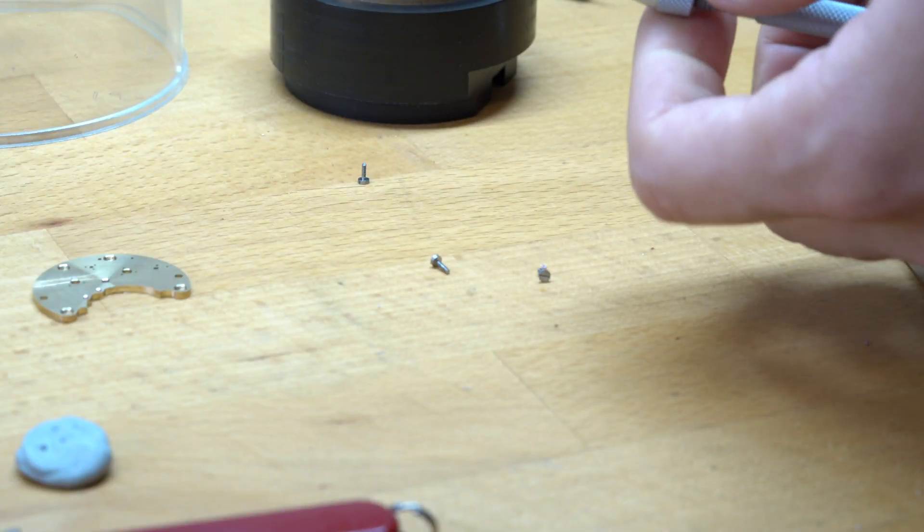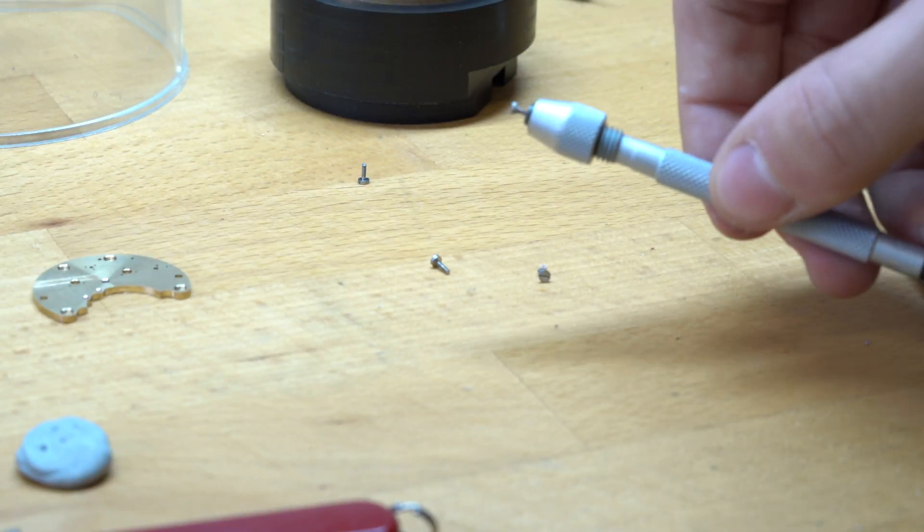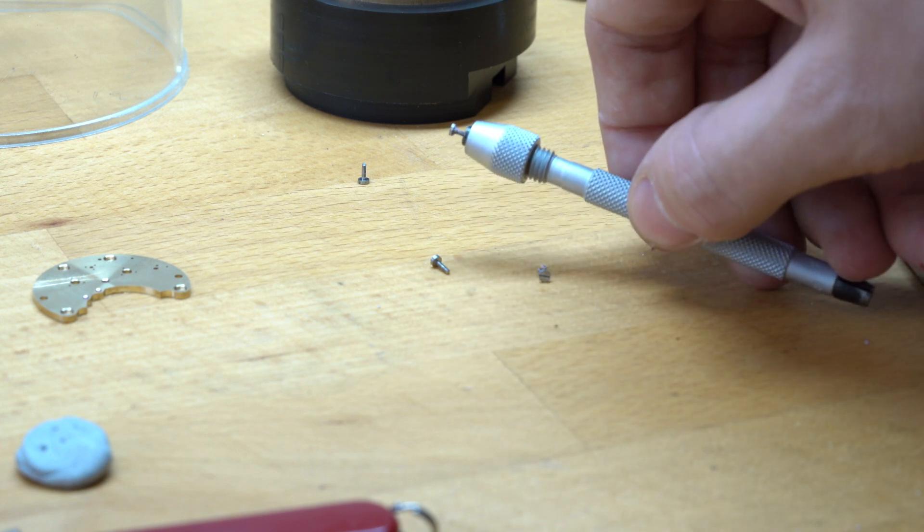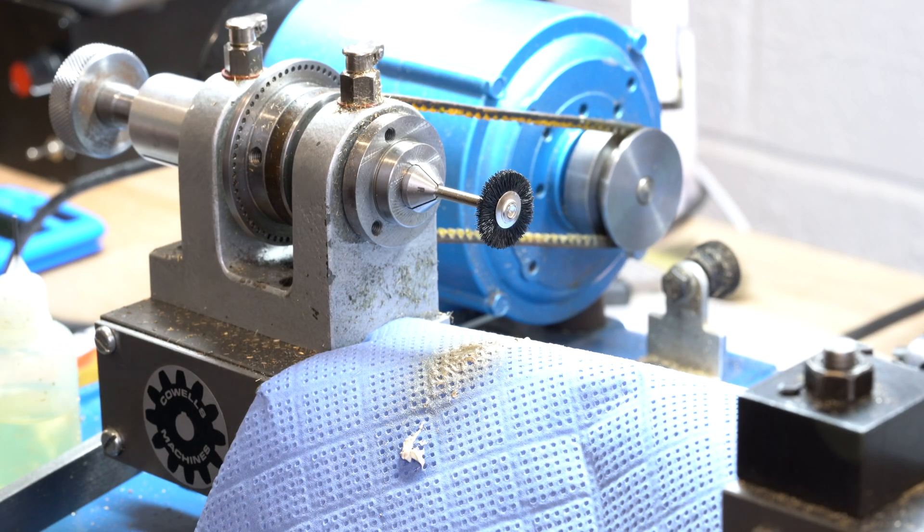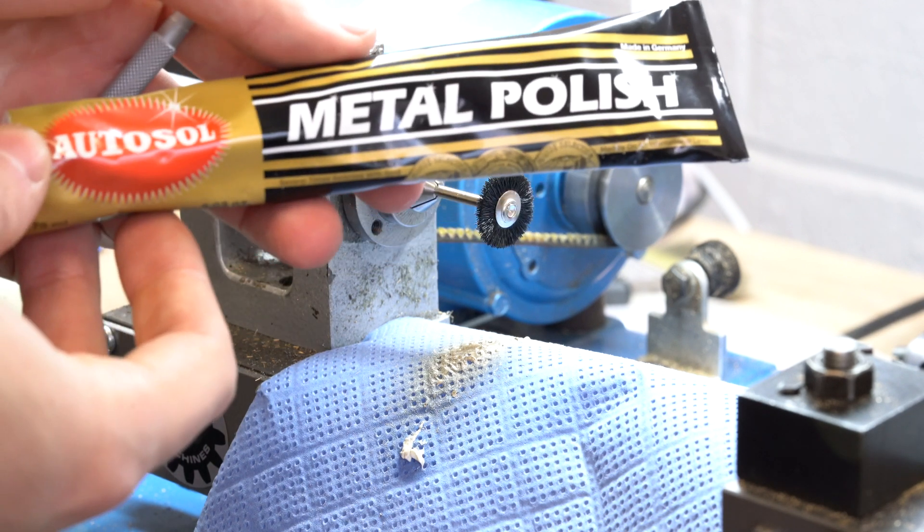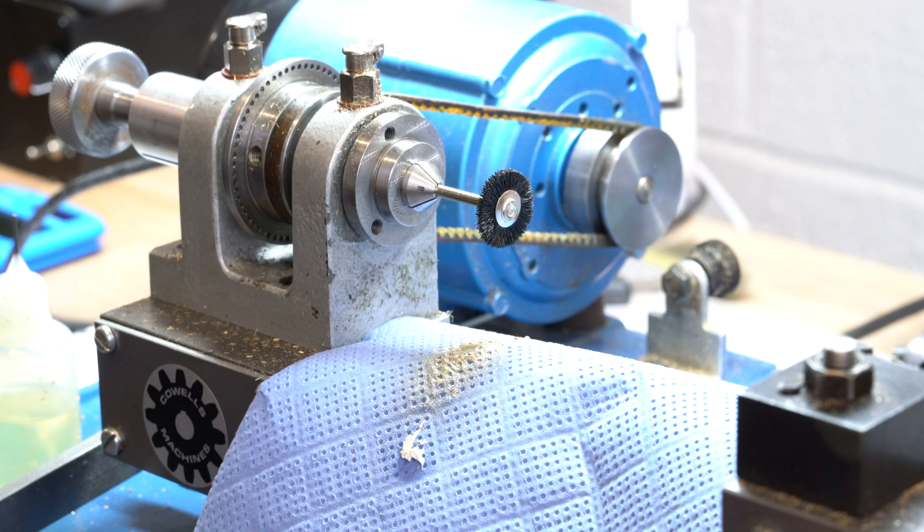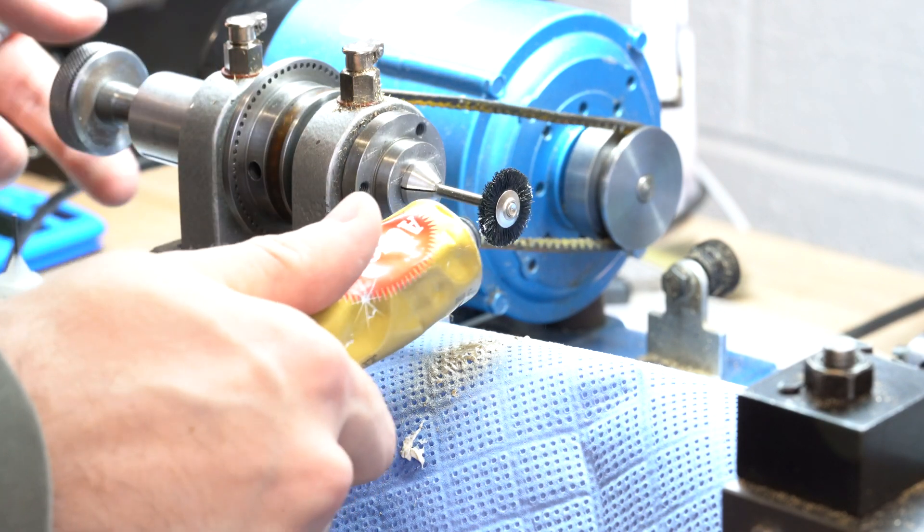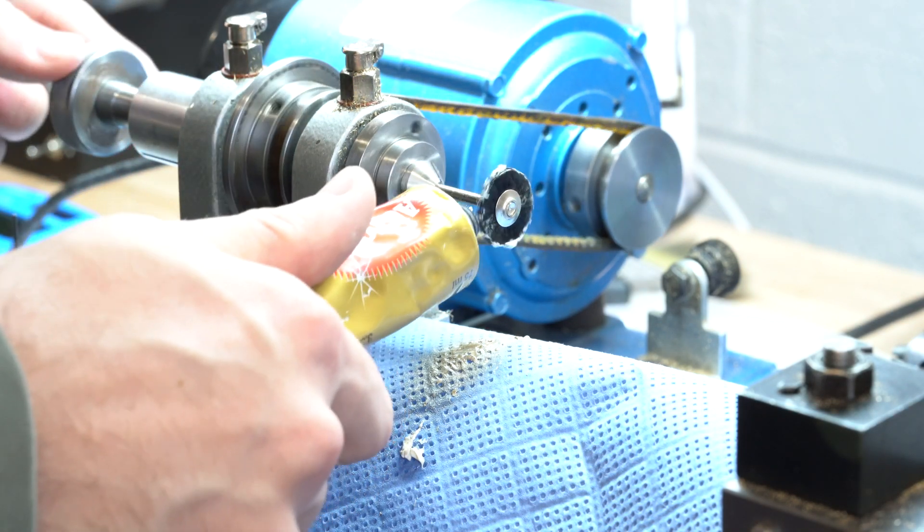So the screw is now hardened and it's got a bit of scale on it. I put it in a pin vise ready to be cleaned up in the lathe. So here I've got a horsehair wire brush in the spindle of the 8mm lathe. I then put a substance called autosol on the brush and I rotate the screw through the compound on the brush. This cleans it up nicely and allows me to see the colour change during tempering.